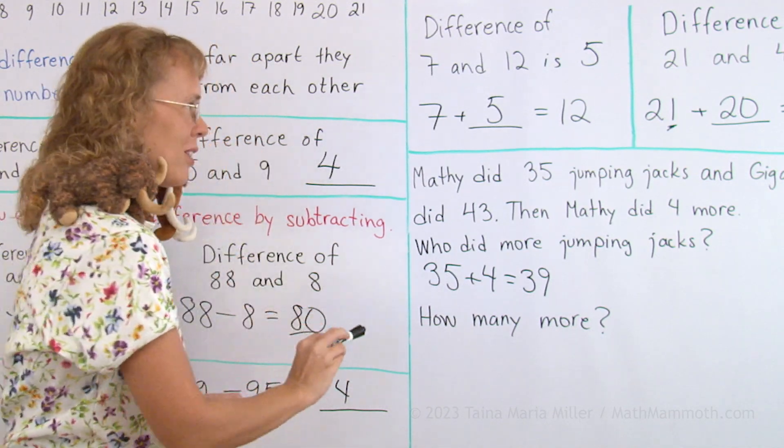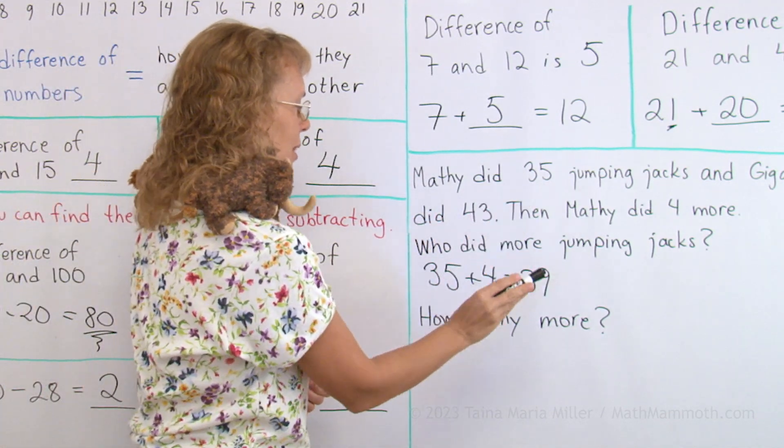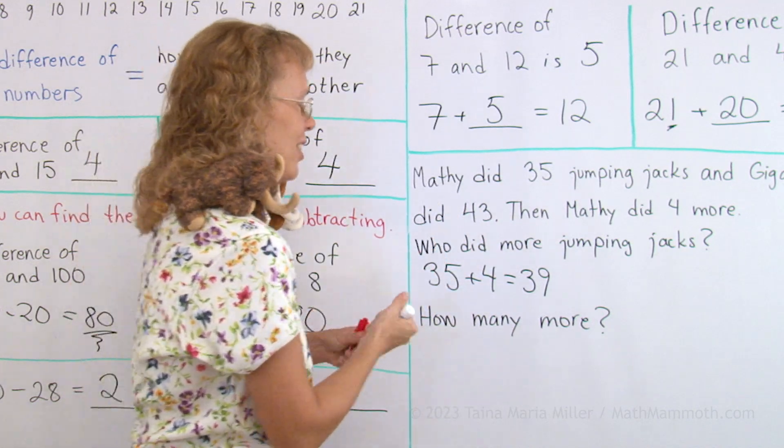Now we can see who did more, because Giganto did 43 and Mathie did 39. So Giganto did more.